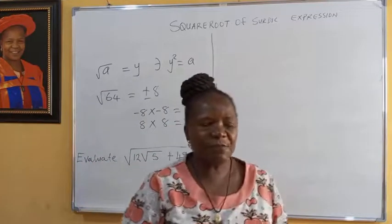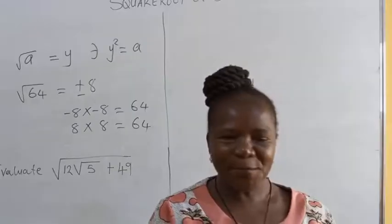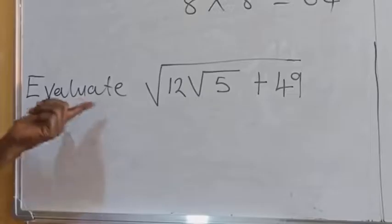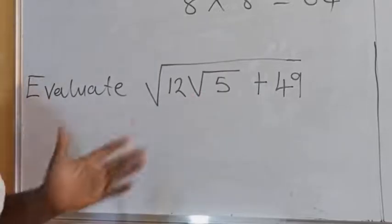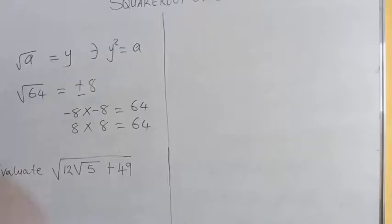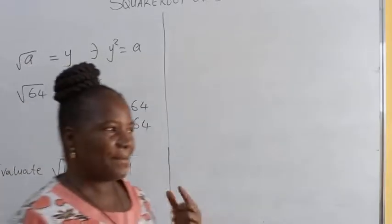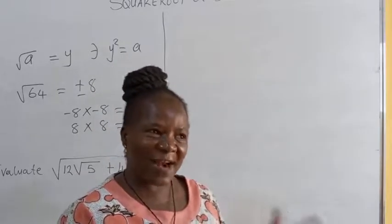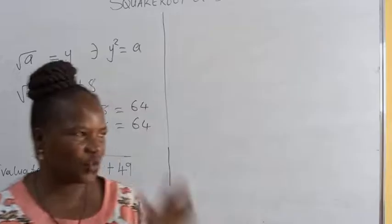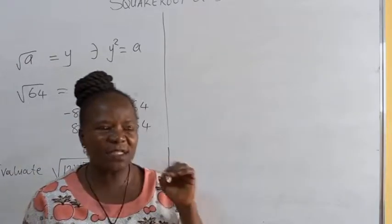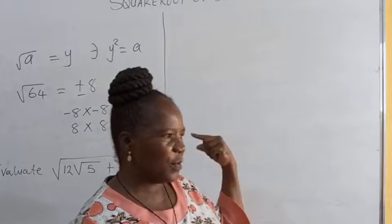Now, if what you are given is a surd expression, how then do you determine the square root? For example, you have to evaluate the square root of 12√5 plus 49. How do we evaluate it? We expect the square root of a surd expression to be a surd expression. There is no way the square root of a surd expression will give you a rational number — it's not possible.